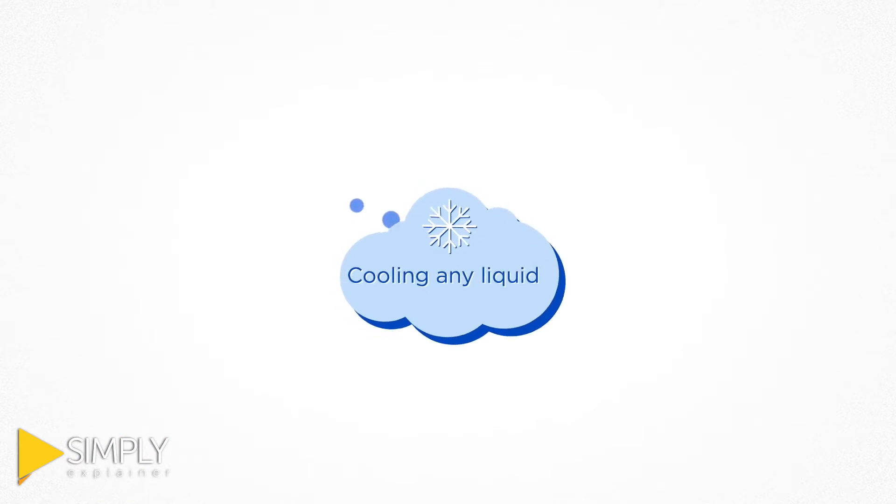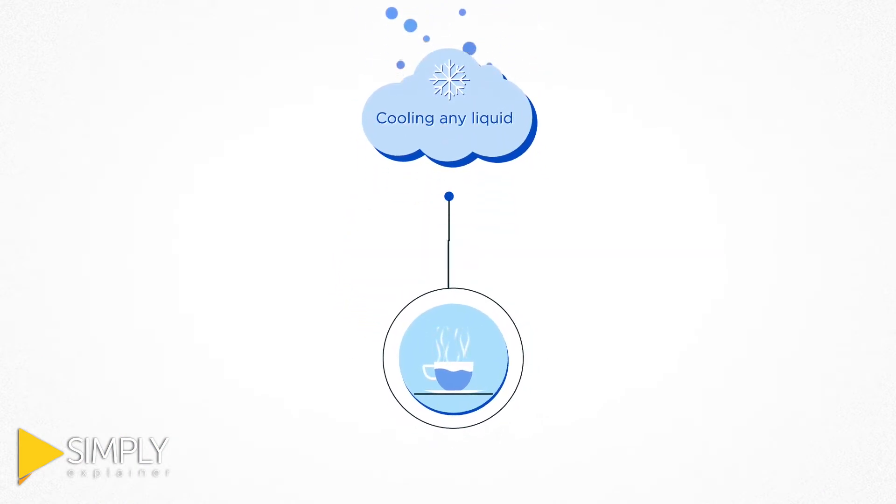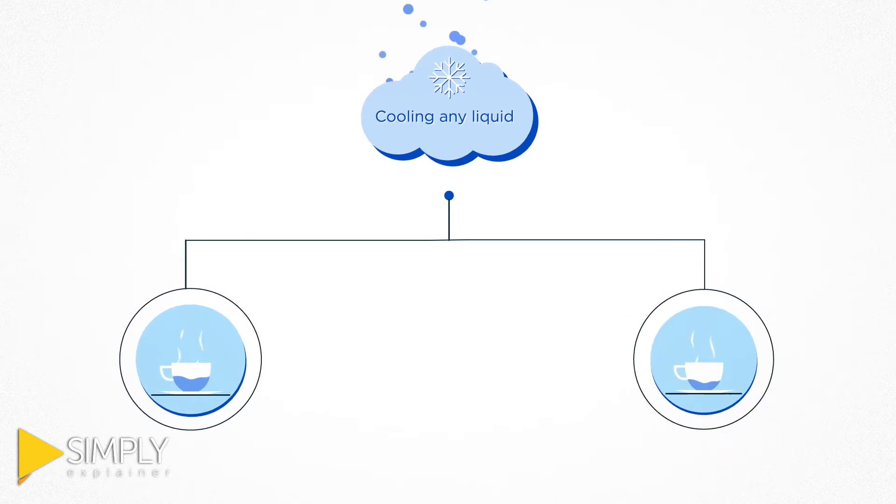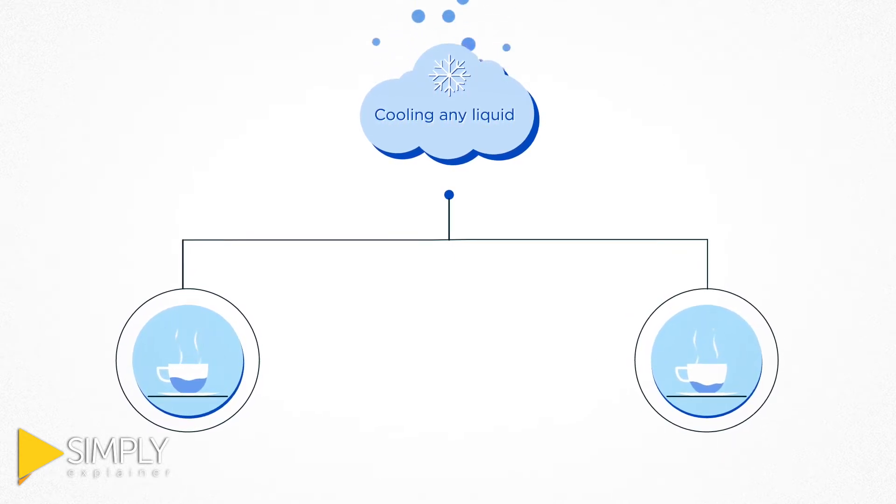A key to cooling any liquid is surface area. If you pour a cup of hot coffee into two other cups, it will cool much faster because of increased surface area.